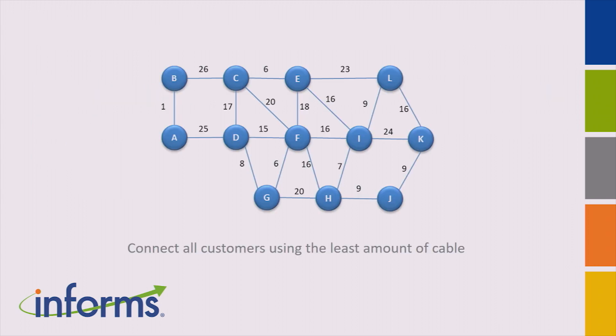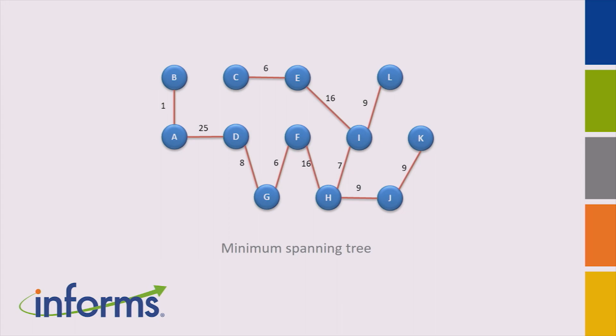For example, imagine you have a graph representing a telecommunications network where you have potential links and you want to connect all nodes while minimizing the amount of cable. As you know, if you want to connect everything, it's a simple problem — you can find an optimal solution very easily using the minimum spanning tree. You can be greedy, starting with the cheapest link and adding links greedily until the whole thing is connected.